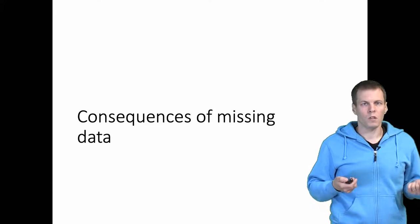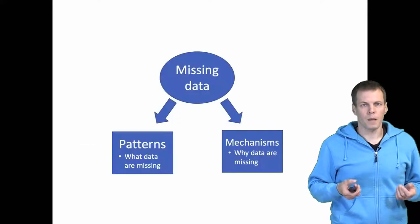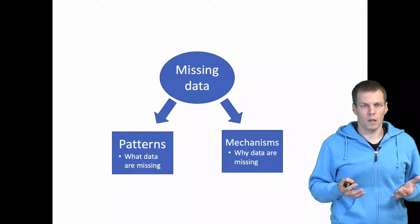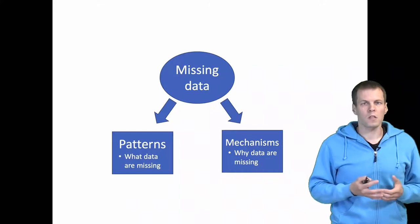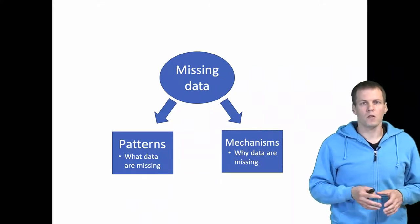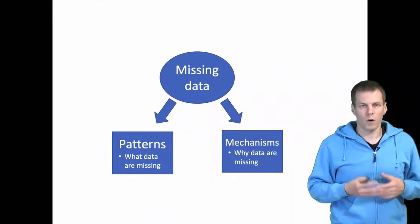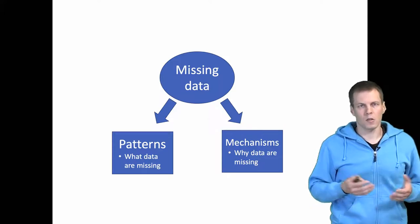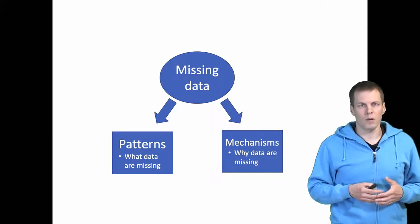So what are the consequences of missing data? The consequences depend on a couple of different things. First, there is the amount of missingness. If there is just one observation out of 1,000 that contains missing data, then the consequences are probably not that severe.